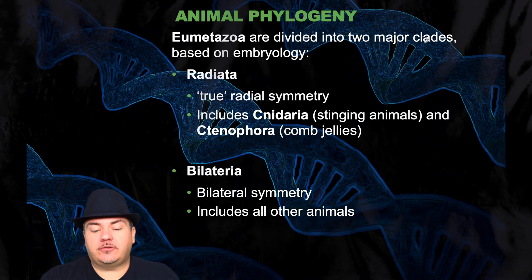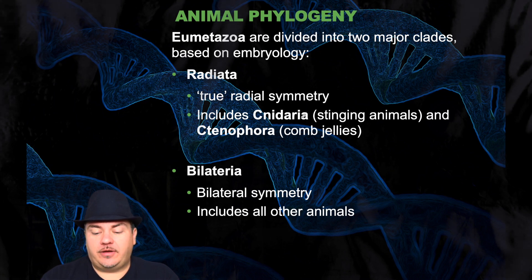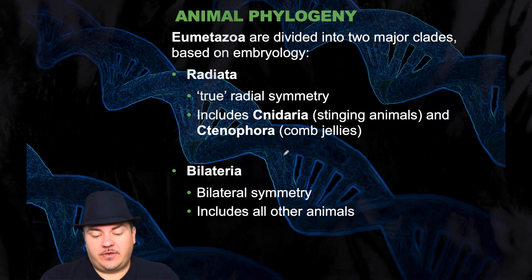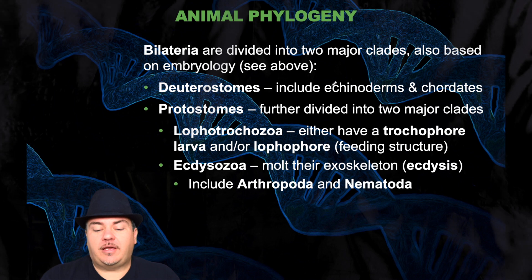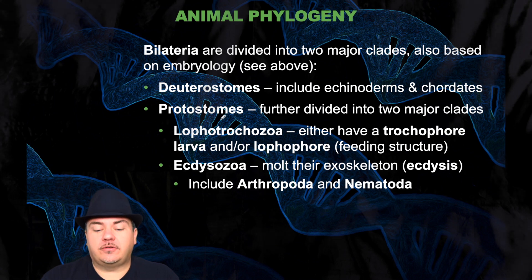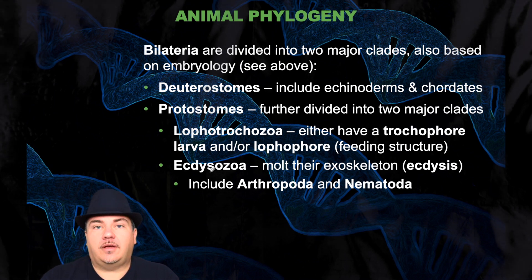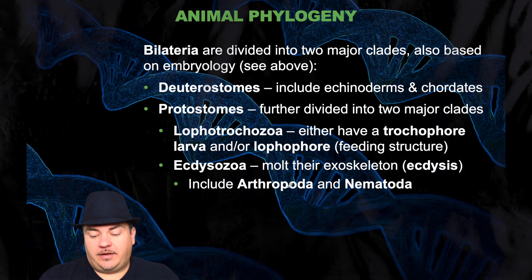The Eumetazoa are divided into two major clades based upon embryology. Radiata, which are true radial symmetry, includes Cnidaria — stinging animals — and Ctenophora, which are comb jellies. And then Bilateria, which have bilateral symmetry, includes all other animals. Bilateria are divided into deuterostomes, which includes echinoderms and chordates, and protostomes, which are further divided into Lophotrochozoa — either having a trochophore larva or a lophophore feeding structure — and Ecdysozoa, which molt their exoskeleton in a process called ecdysis, and include arthropods and nematodes.